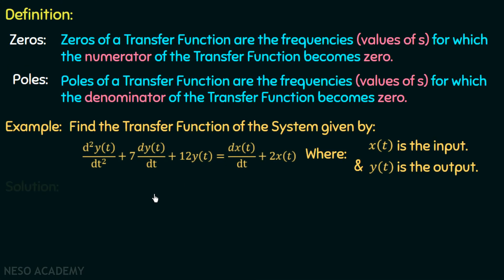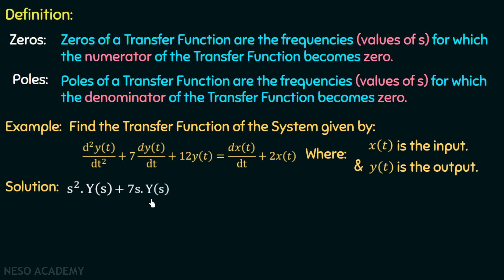Moving on to the solution, the first step is to find the Laplace transform for this differential equation. If we find the Laplace transform and put all initial conditions equal to zero, then we get: s²Y(s) + 7s·Y(s) + 12Y(s) = s·X(s) + 2X(s).